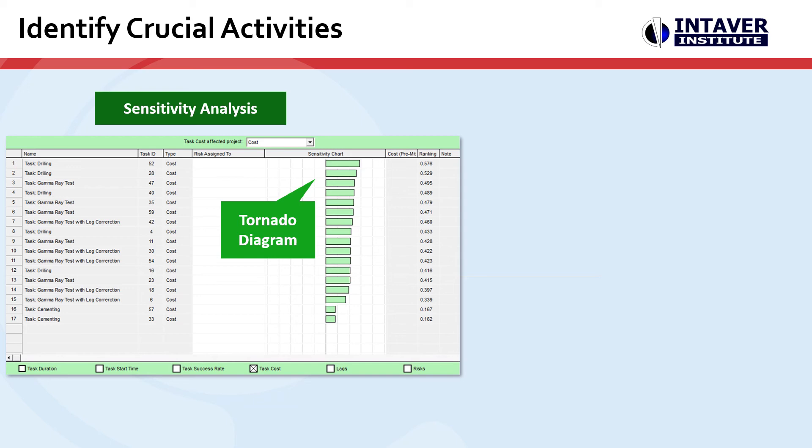First, we'll look at sensitivity analysis. The tornado diagram tells us which activities have the most impact on a particular project parameter, in this case cost.